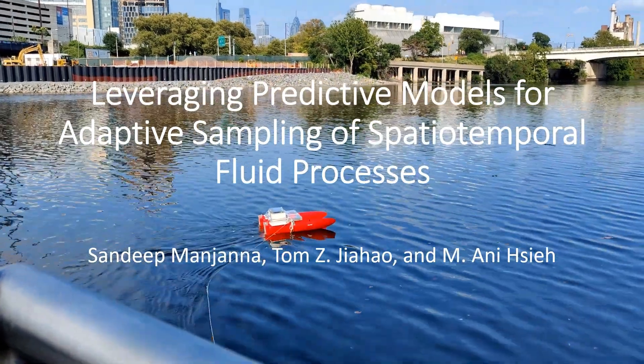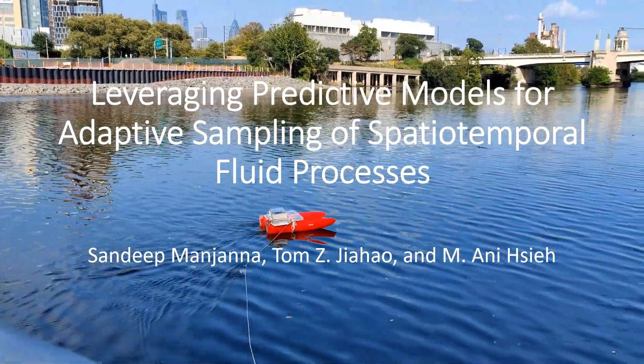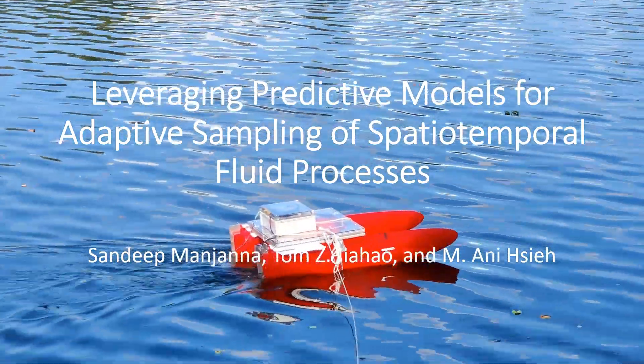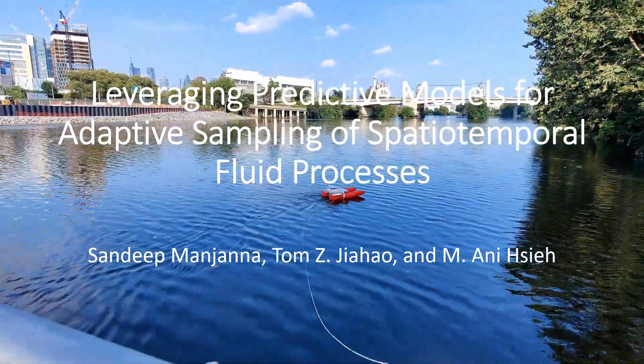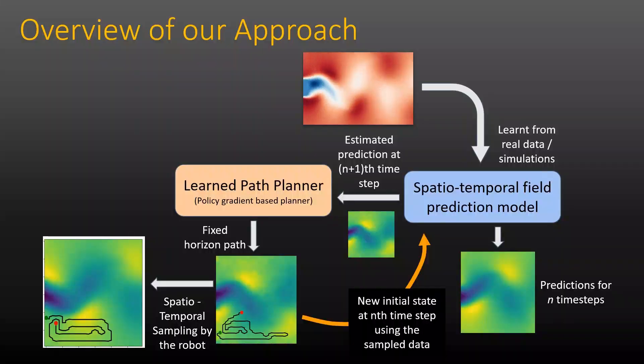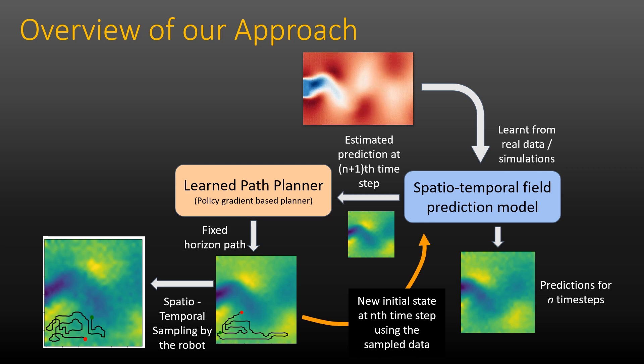In this paper we present PASST: Predictive model based Adaptive Sampling of Spatio-Temporal processes, an adaptive sampling algorithm for autonomous monitoring of fluid. Our approach integrates a predictive fluid model with adaptive sampling to plan paths for autonomous vehicles to efficiently and persistently monitor spatio-temporal processes in a given region of interest. The predictive model informs the sampling algorithm to plan for better paths, while the sample data enable more accurate predictions by feeding the predictive model with accurate and up-to-date measurements.